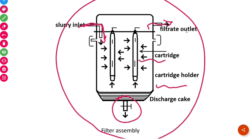Now let's see what is the principle behind this cartridge filter. A cartridge filter is just like a thin porous membrane and it consists of two types of membrane filters — one is pre-filter and the other one is actual filter. These two filters are combined together into a single unit for the filtration purpose. Filtration occurs by a sieve-like mechanism, so surface filtration is the basic mechanism. The slurry passes through the cartridge unit, liquid is collected through the filtrate outlet, and solid particles are retained on the surface and discharged through the discharge outlet.